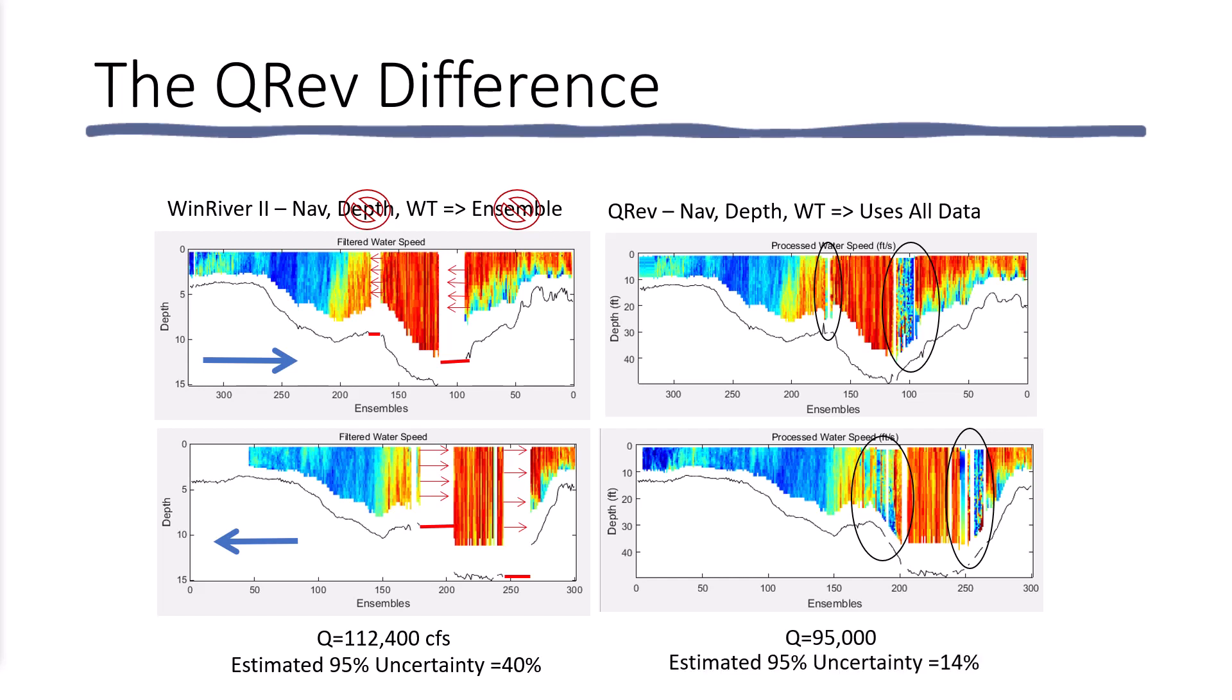And the result discharge from QREV was 95,000 cubic feet per second, which actually was very close to the historical rating. Had this discharge been calculated with QREV, which was not available at the time, the 95,000 would have been reported to the Weather Service. It would have been consistent with their current flood forecast. No revision would have been made, and the local levee board would not have chosen to breach their levee. So there can be significant consequences to the algorithms we use to process our discharge data measured with an ADCP.